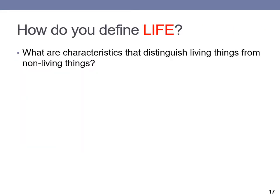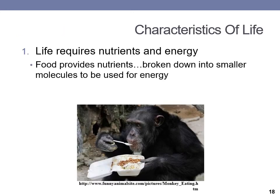Pause the video here and write an answer to the question: how do you define life? That is, what distinguishes living things from non-living things? You should know the characteristics that define life. Living things require nutrients and energy. As humans, we take in nutrients and metabolic processes allow food to be broken down into smaller molecules that our cells can use to produce the energy that we need.